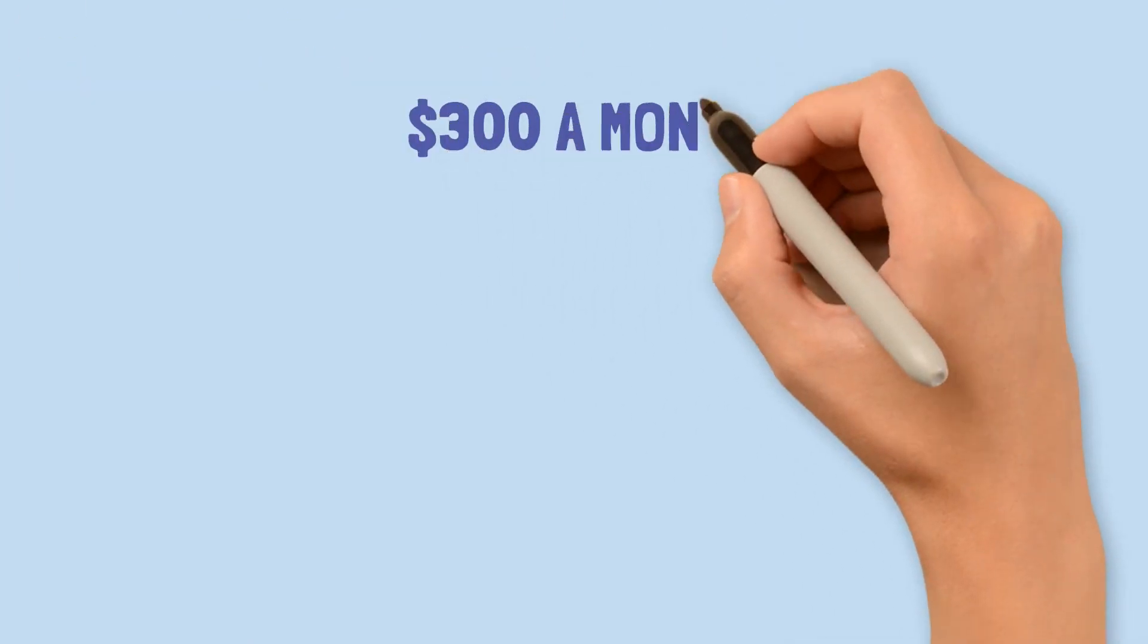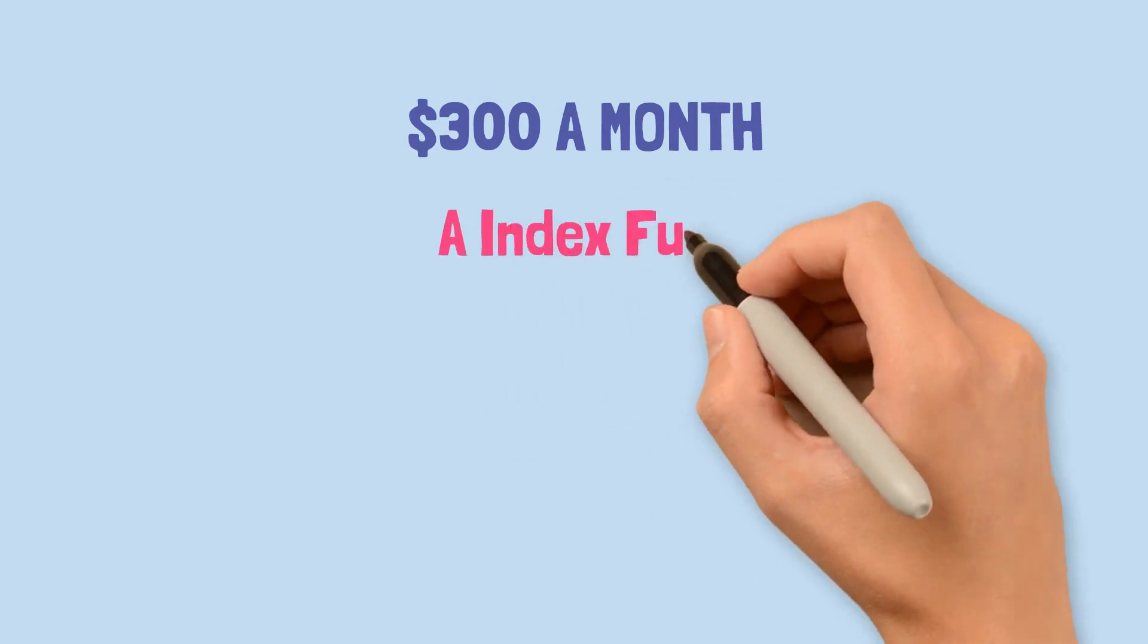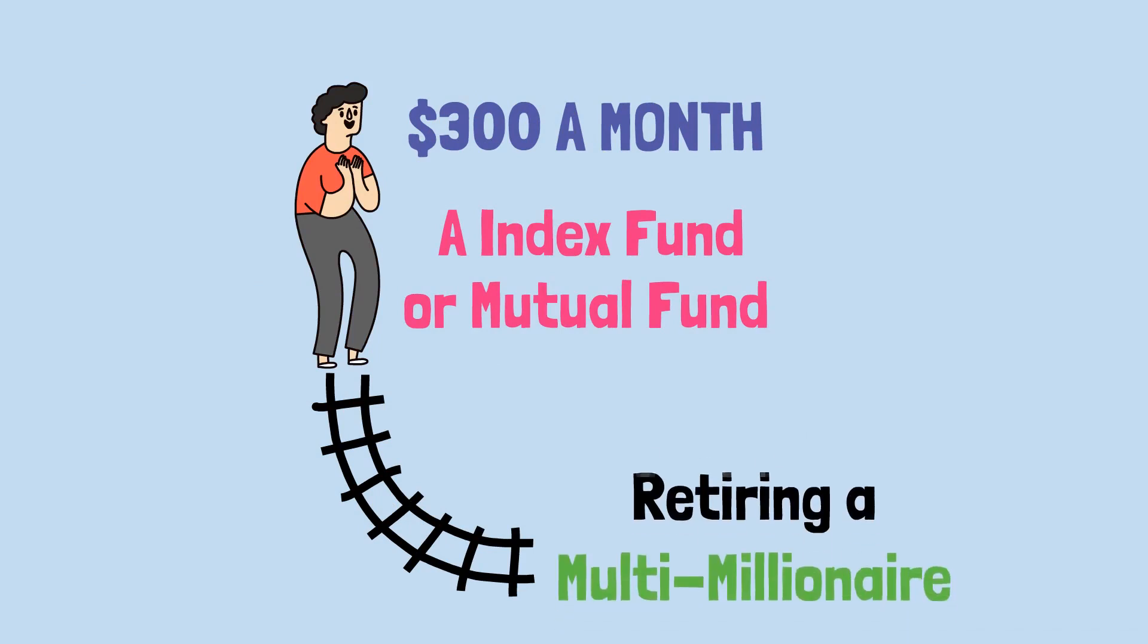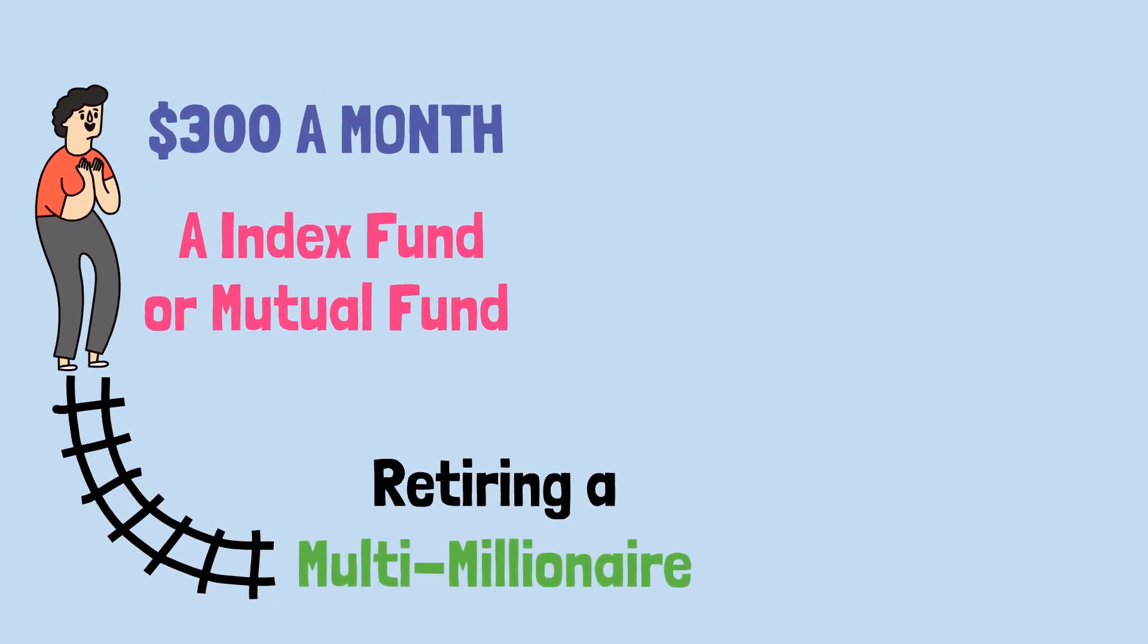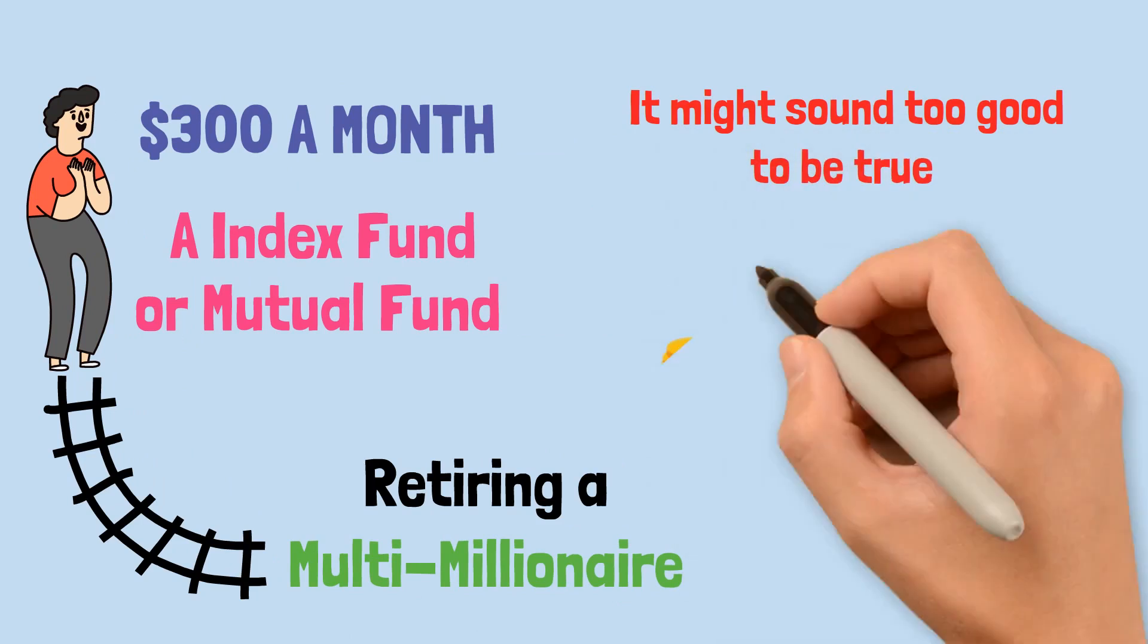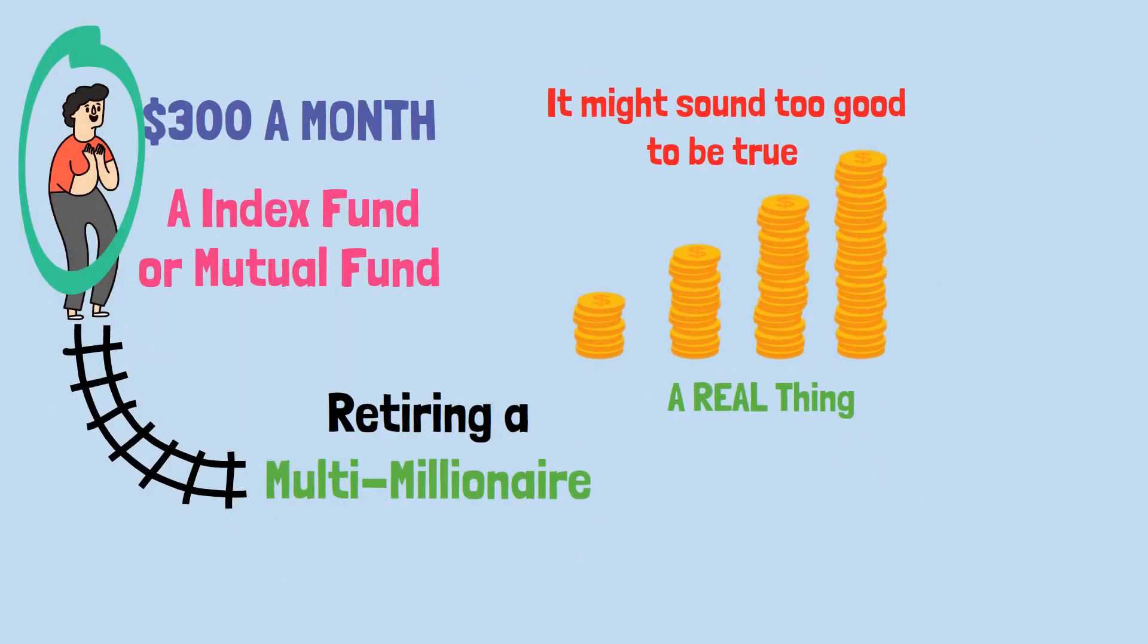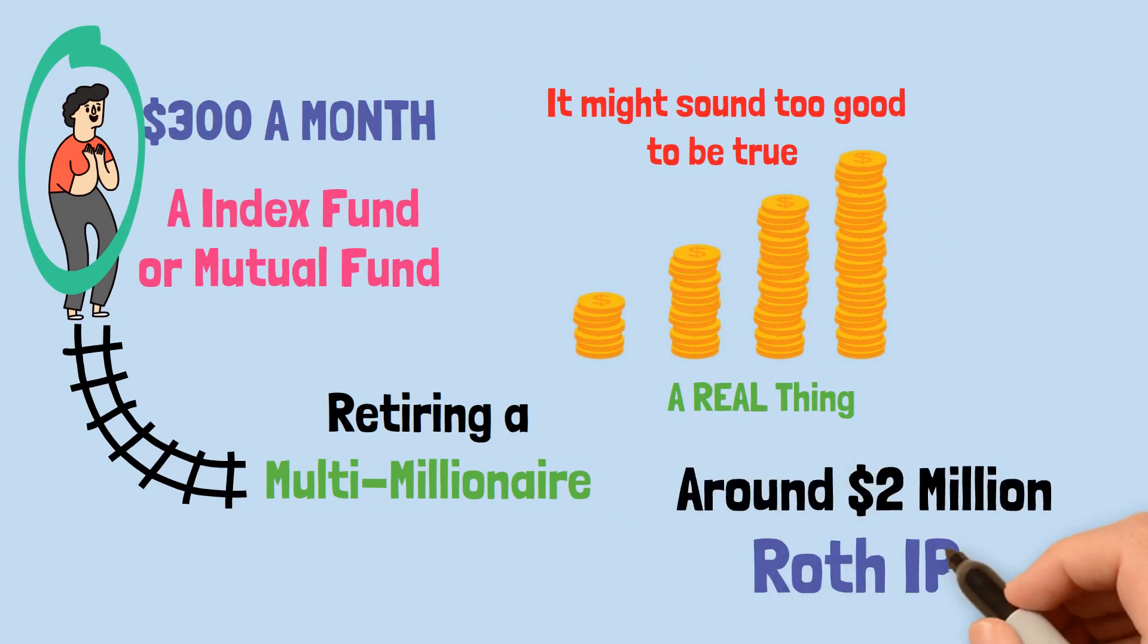By investing $300 a month in an index fund or a mutual fund with a solid track record, Liam could be on his way to retiring a multi-millionaire. It might sound too good to be true, but the power of compound interest over time is a real thing. By the time Liam reaches the traditional retirement age, he could have around $2 million in his Roth IRA.